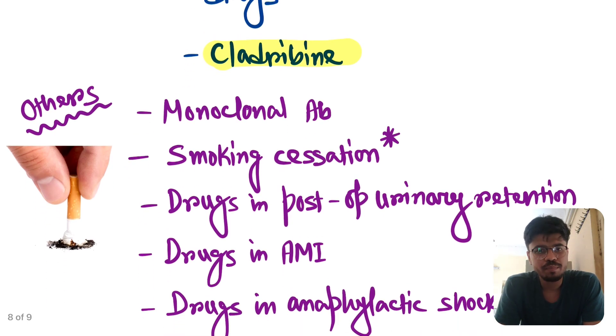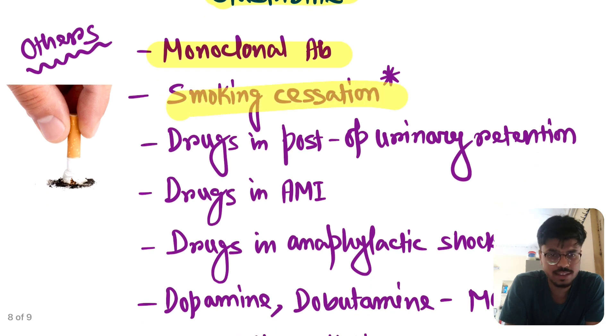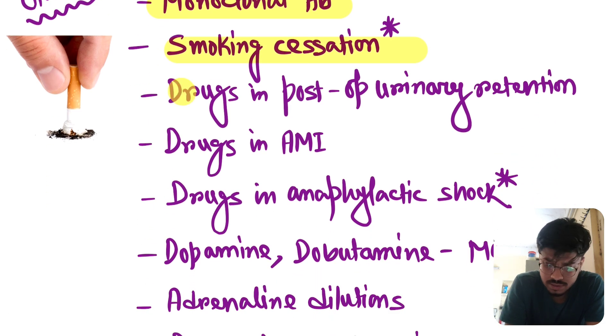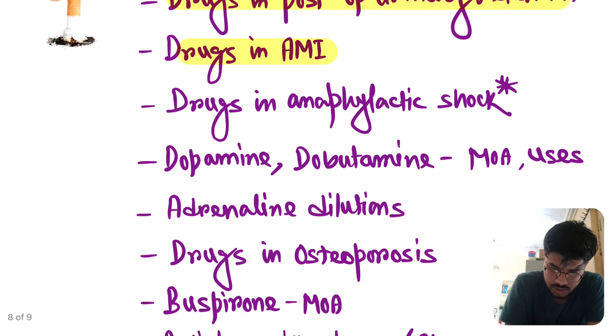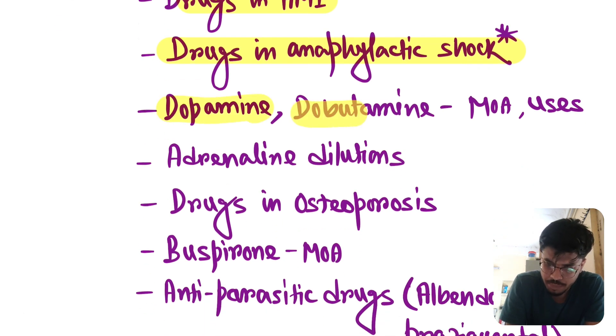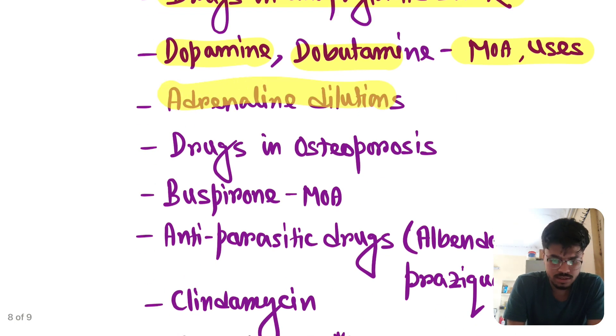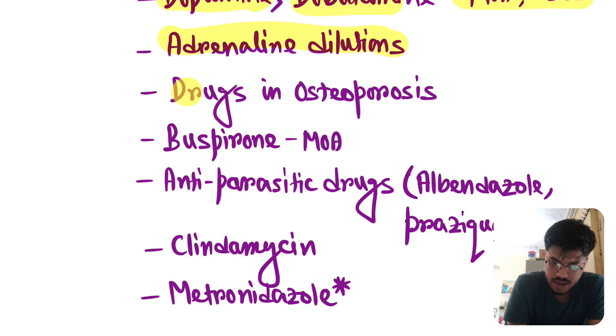You should read some important other topics. Like monoclonal antibody. Smoking cessation. Very very important. Drugs in post-op urinary retention. Drugs in AMI. Drugs in anaphylactic shock. Very very important. And the adrenaline dilutions are important. Dopamine, dobutamine. Mechanism of action and side effects. There are three different dose ranges in dopamine. You have to read them carefully. Adrenaline dilutions, as I previously mentioned.